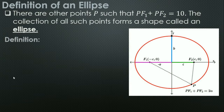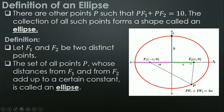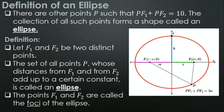Let F₁ and F₂ be two distinct points. The set of all points P whose distances from F₁ and F₂ add up to a certain constant is called an ellipse. The points F₁ and F₂ are called the foci of the ellipse.